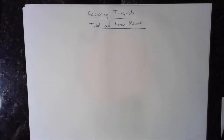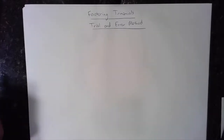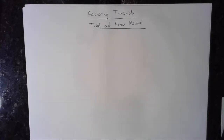This video is about factoring trinomials, specifically using the trial and error method, which is the best method because it's the quickest. When you do larger kinds of problems where factoring trinomials is a small piece, trial and error is the fastest and most efficient. Before attempting trial and error, make sure you're very good with your multiplication tables. If that's something you're lacking, grab some flash cards and practice.